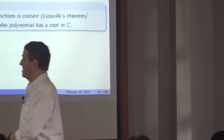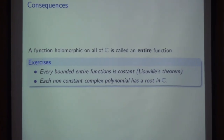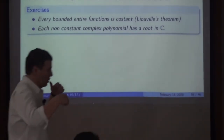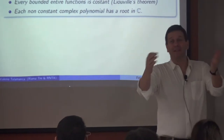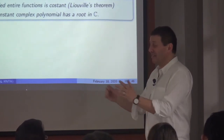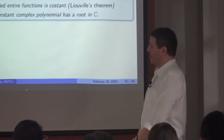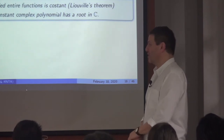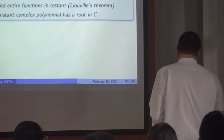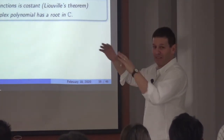Now we come to exercises. A function holomorphic on all of ℂ is called an entire function. The two exercises are: first, Liouville's theorem — every bounded entire function is constant; second, the fundamental theorem of algebra — every non-constant complex polynomial has at least one root in ℂ. You can use freely whatever I claimed as a theorem before.